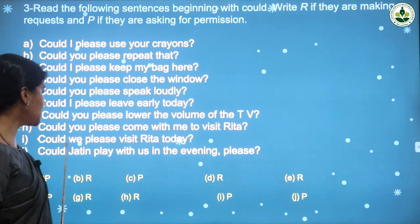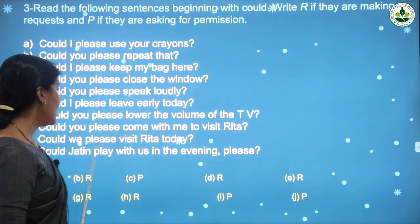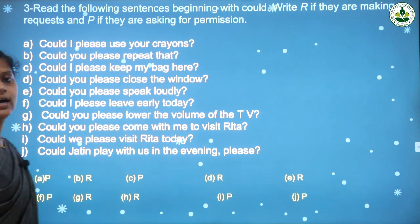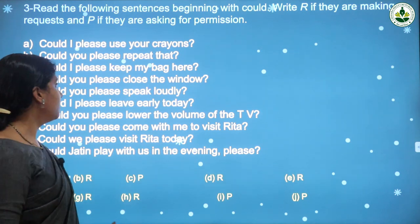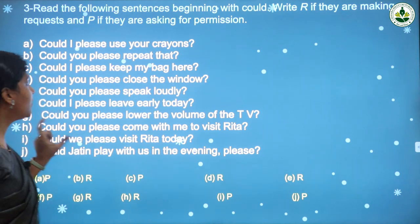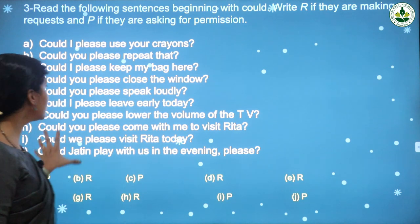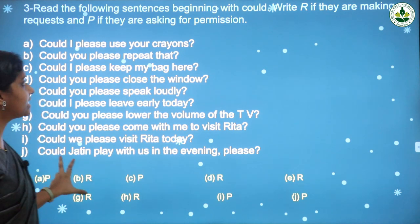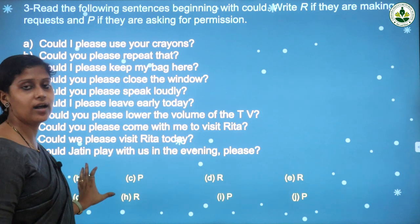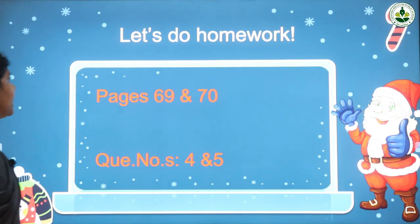'Could Jadin play with us in the evening please?' — it is also a permission, write P. To summarize: write R if the sentence shows a request and write P if the sentence is showing permission.